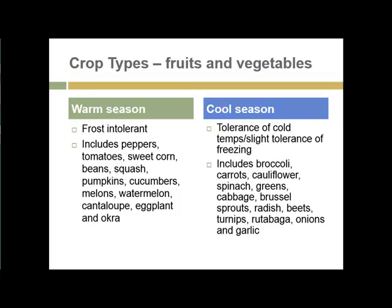Eggplant are all warm season crops and can only be grown after all danger of frost is passed and until fall begins. Cool season crops are much more tolerant of cold temperatures and cold soils, and some even have a slight to moderate degree of tolerance to freezing temperatures. This group includes broccoli, all of the mustard family, cauliflower, Brussels sprouts, cabbage, and other crops such as carrots, lettuce, rutabaga, onions, and garlic, which can be grown much earlier and later in the season. Some of them will even survive our cold Midwestern winters to come back the next year.